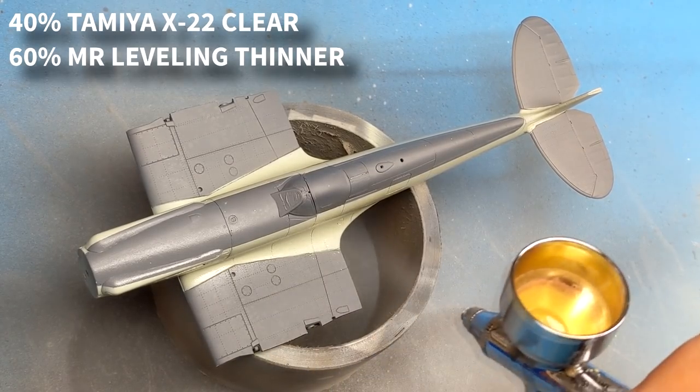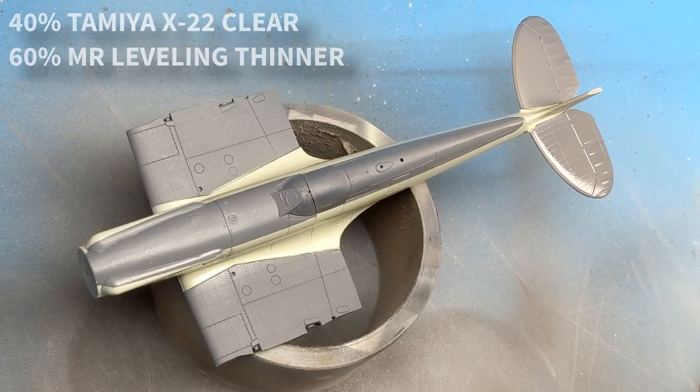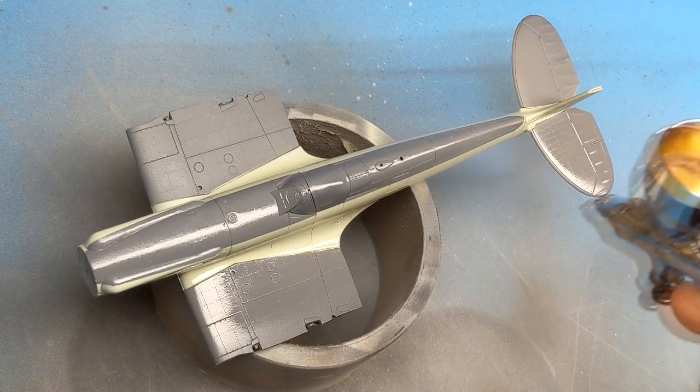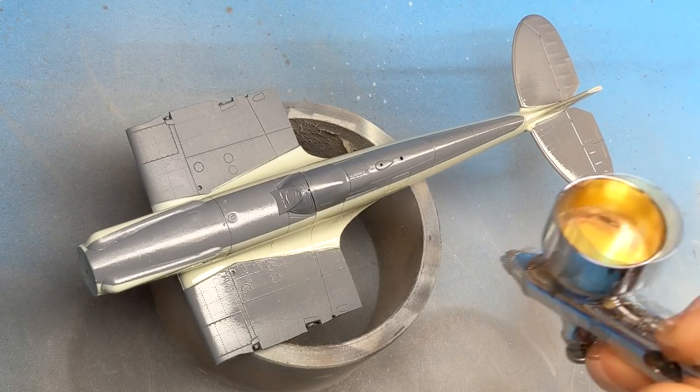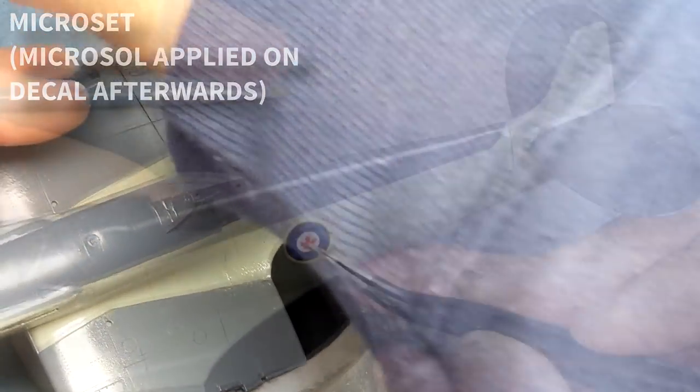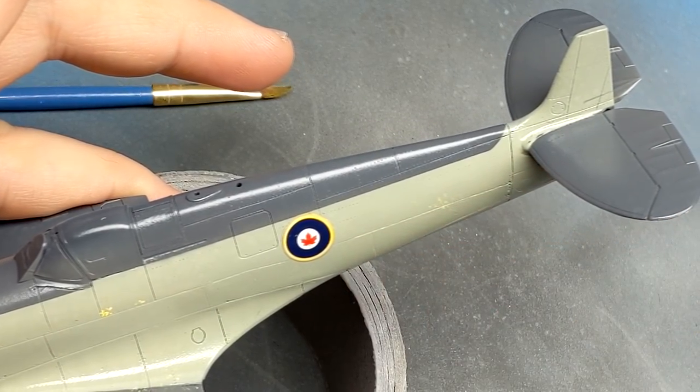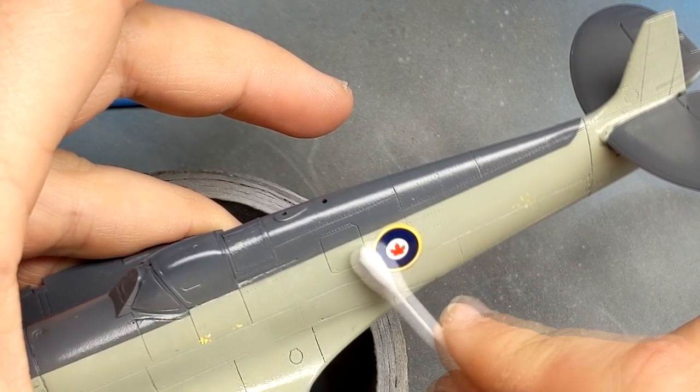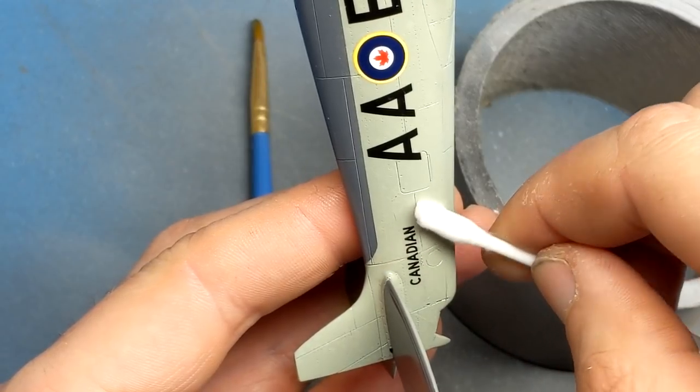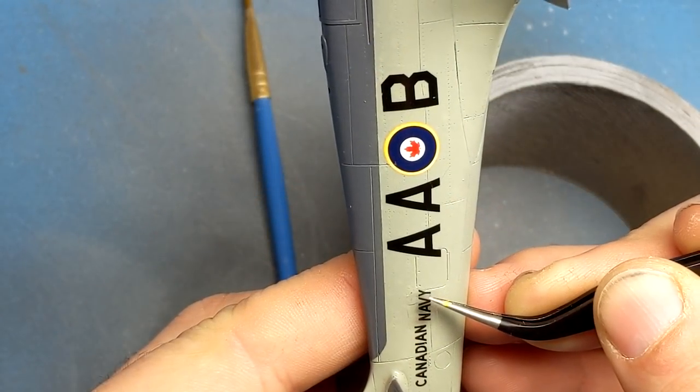I generally don't put clear coats on my paints before decals. I find that's usually an unnecessary step, but where this is my first time using Fundekals, I decided to put the clear coat on just in case I had to remove the decals or make adjustments and try to protect that paint a little bit. But in this case, it turns out to be something I didn't need because the decals went on great. They're nice and thin, very minimal carrier film. And with a little bit of Micro Sol and Micro Set, they fell right into the panel lines and rivets with zero issues. I'll definitely be getting those again.